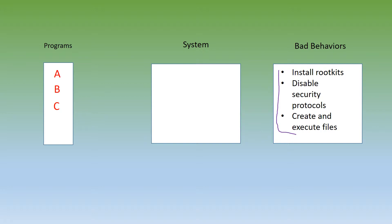For example, let's say program A installs rootkits. An attacker may use program A, so program A will enter the system, and the system will start to watch and analyze program A execute its code. Because program A installs rootkits, it will be labeled as malicious since the system is looking out for this type of behavior. The system will then quarantine it and take action against program A.